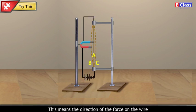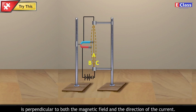This means the direction of the force on the wire is perpendicular to both the magnetic field and the direction of the current.